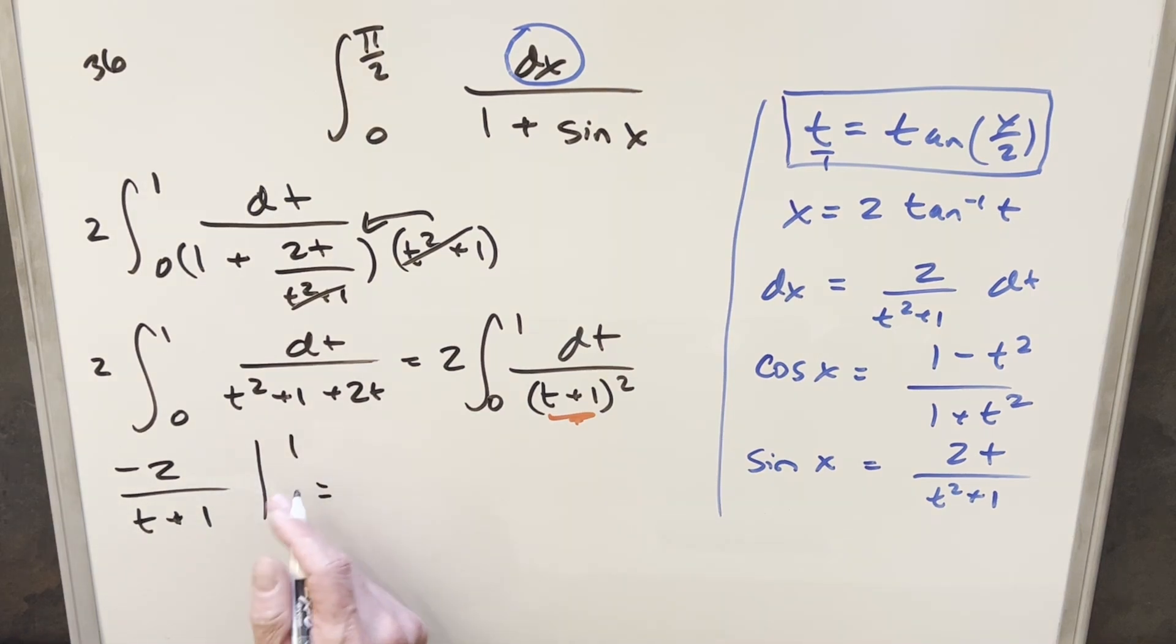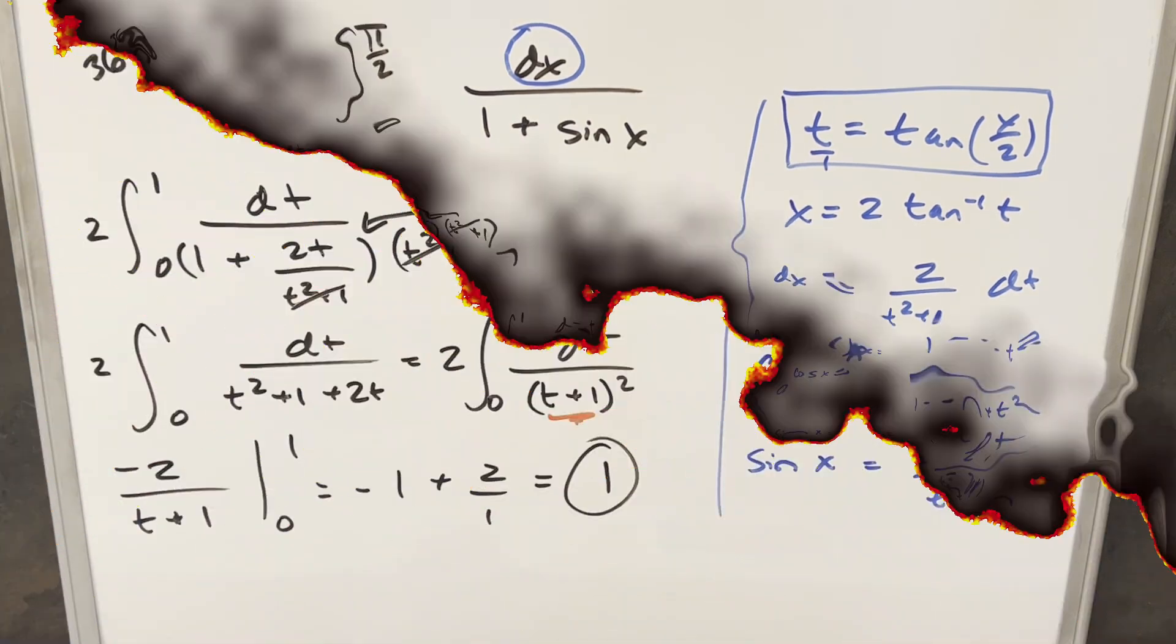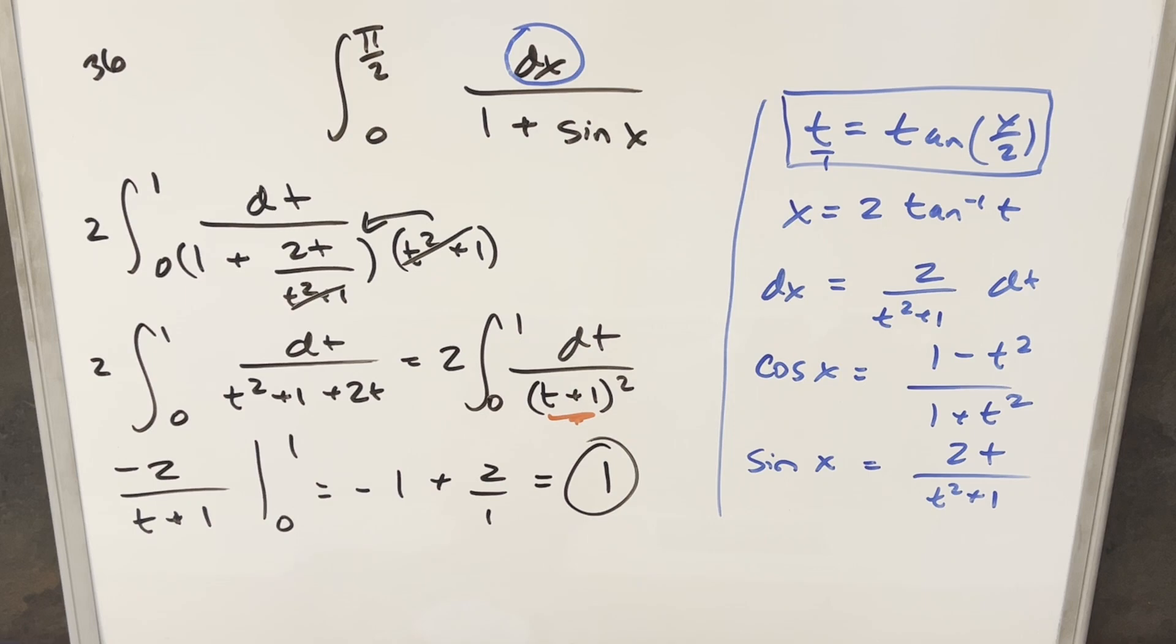Then evaluating this first at 1, you plug a 1 in here, you're going to have, this is going to become just minus 1. Minus times minus here is going to give me a plus. Plug in 0, we end up with a 2 over 1, or just 2. Subtracting 1 from 2, we get our final solution of just 1. Okay, there you have it. Really fun problem with the Weierstrass substitution. Thanks everyone for watching. Have a good day.